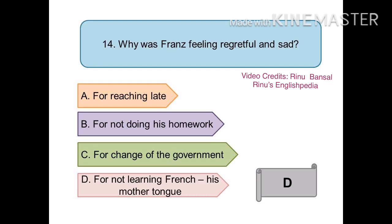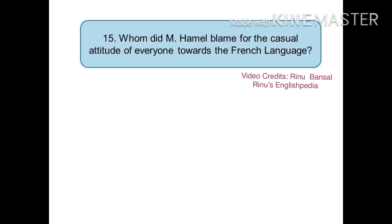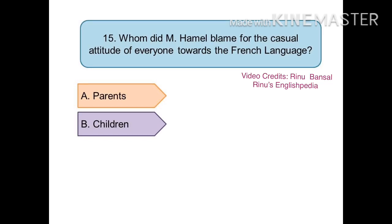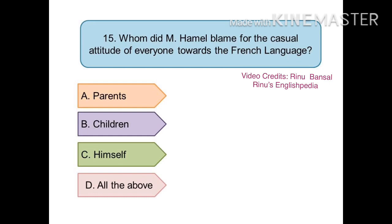The right answer is (d) not learning French, which was his mother tongue. The next question is: whom did Monsieur Hamel blame for the casual attitude of everyone towards the French language? The options are (a) parents, (b) children, (c) himself, or (d) all of the above. The right answer is (d) all of the above. Monsieur Hamel believed that all of them were to be blamed for the state of affairs in Alsace and Lorraine.